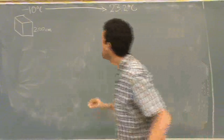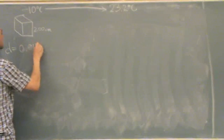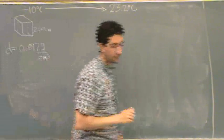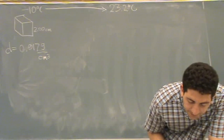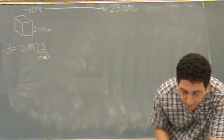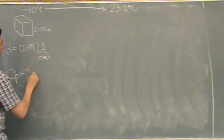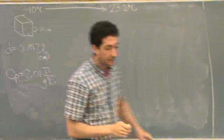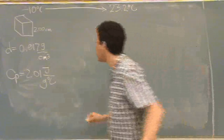It tells us the density is 0.917 grams per centimeters cubed, the specific heat is 2.01, and the enthalpy of fusion is 6.01.